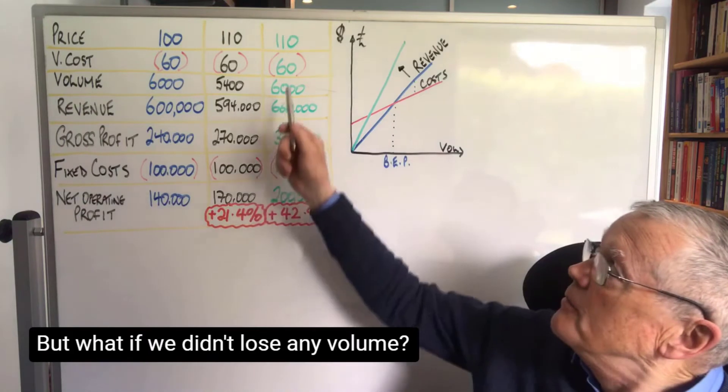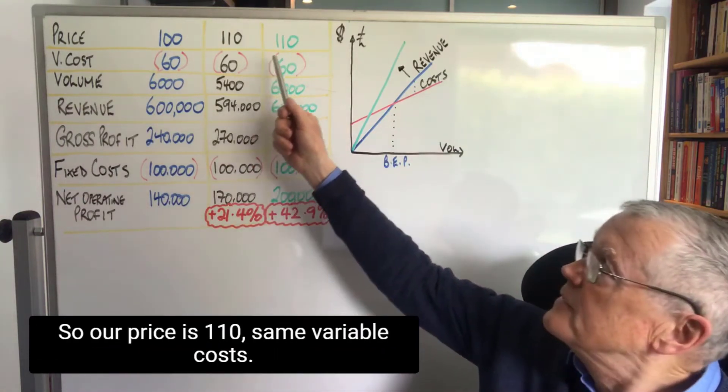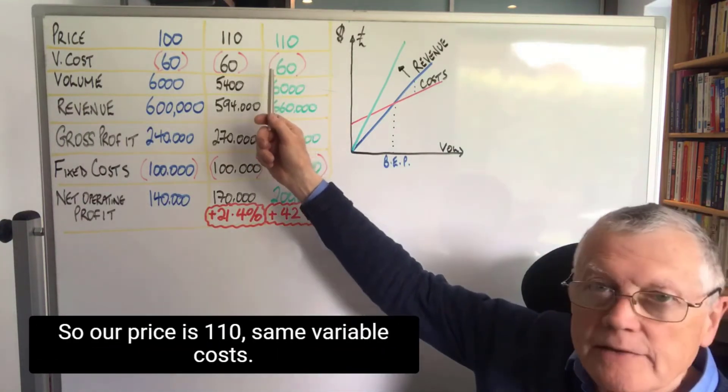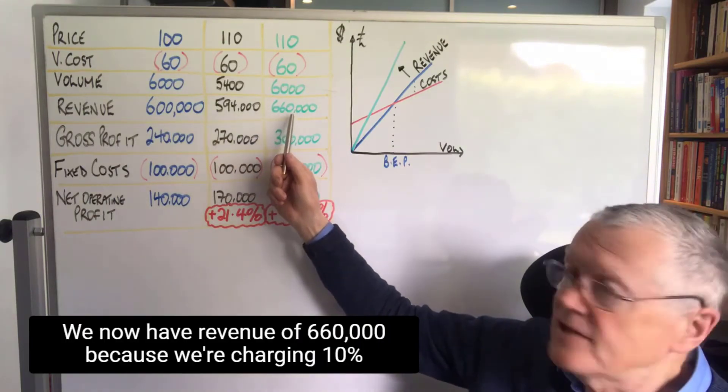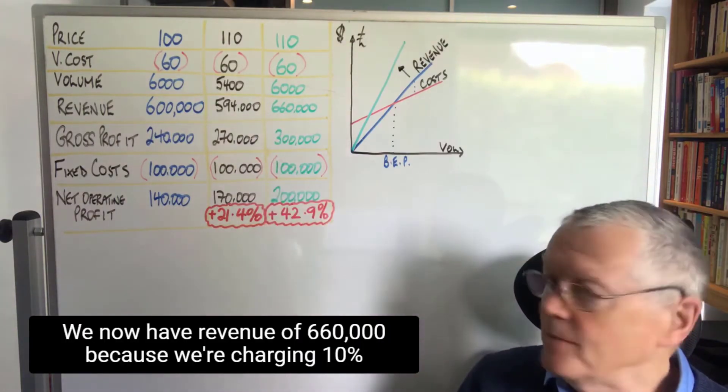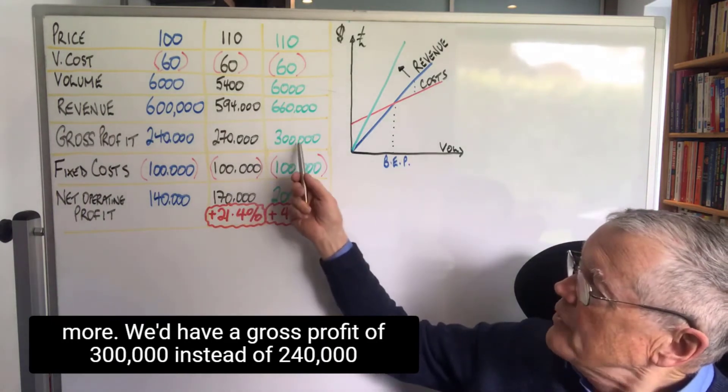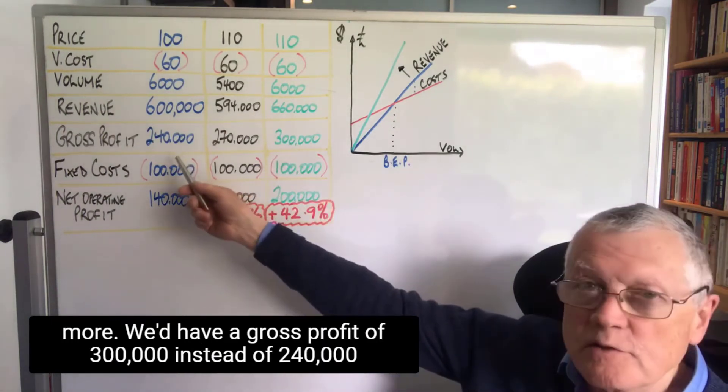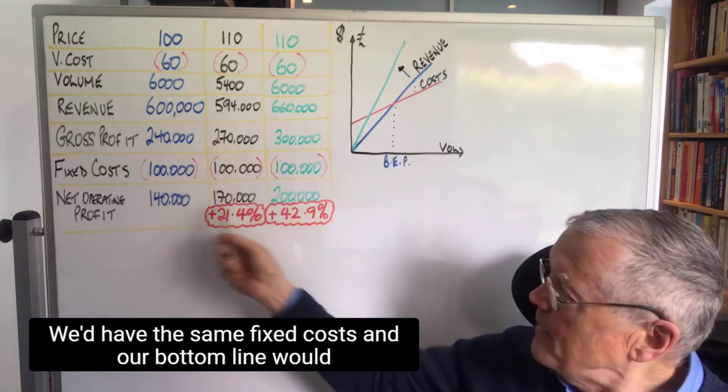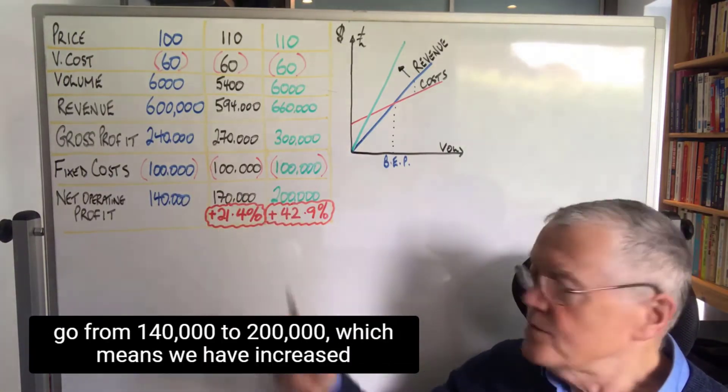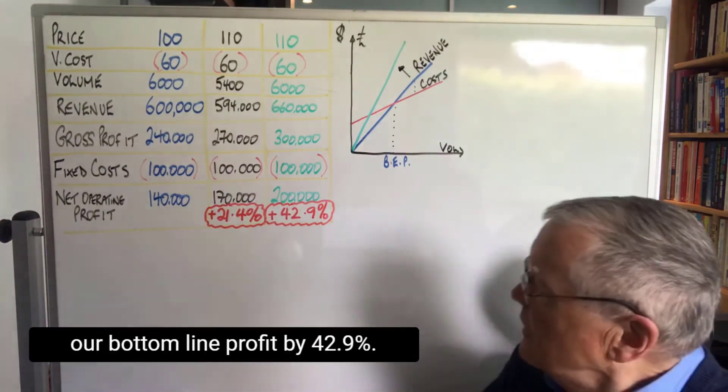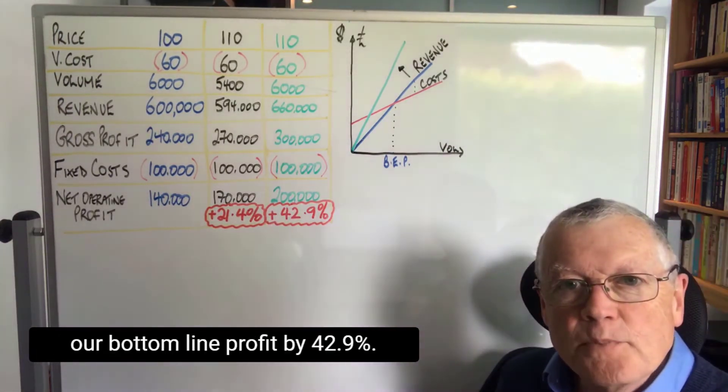But what if we didn't lose any volume? So our price is 110, same variable costs. We'd now have revenue of 660,000 because we're charging 10% more. We'd have a gross profit of 300,000 instead of 240. We'd have the same fixed costs, and our bottom line would go from 140,000 to 200,000, which means we'd have increased our bottom line profit by 42.9%.